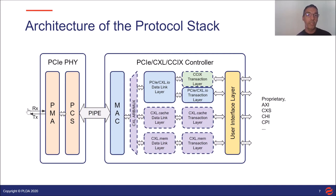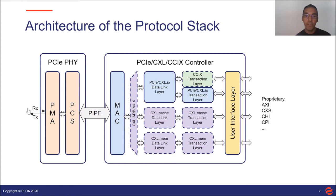On top of the MAC is where protocol differentiation occurs. PCI Express and CCIX share a common data link layer, while CXL adds the arbiter and multiplexer (MUX) and specific data link layers for CXL.cache and CXL.mem sub-protocols. Then we have the transaction layer, which is specific to each protocol. And finally, the user interface layer, which is not defined in any specification but nonetheless required to expose a usable interface for the application logic. That user interface can be a proprietary interface, though the trend is to offer standardized, widely used, and proven interfaces such as those based on AMBA specifications — for example, AMBA AXI, CXS, or CHI.